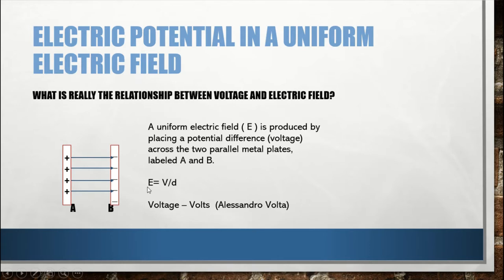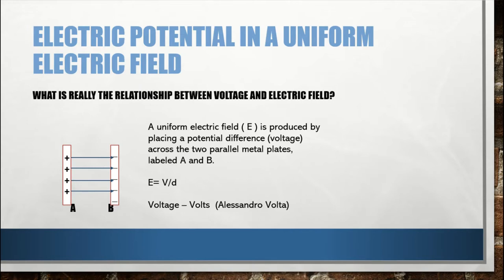A uniform electric field E is produced by placing a potential difference (voltage) across two parallel metal plates A and B. The relationship between E and voltage for parallel conducting plates is: E equals voltage divided by distance. Here E is the electric field, V is the voltage or potential difference, and d is the distance between the two plates. The unit of voltage is volts, named in honor of Count Alessandro Volta, best known for inventing the electric battery.